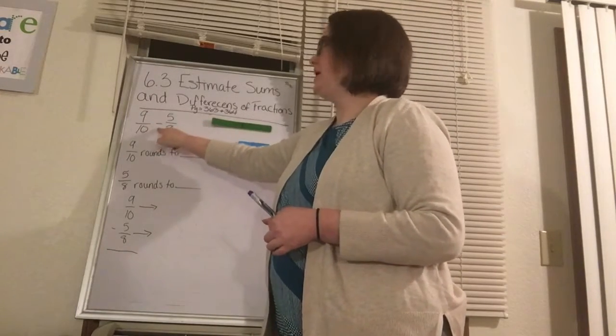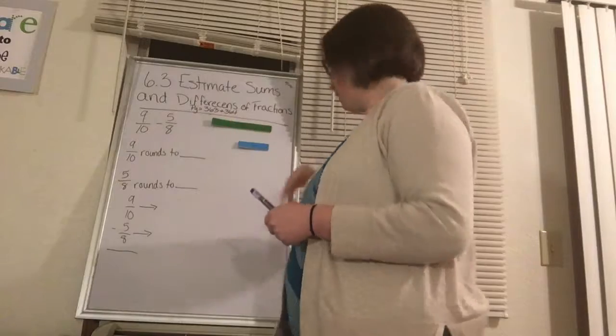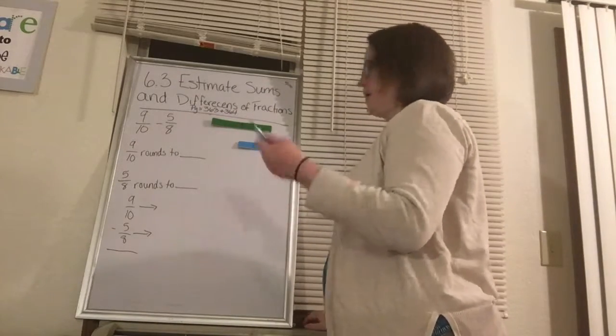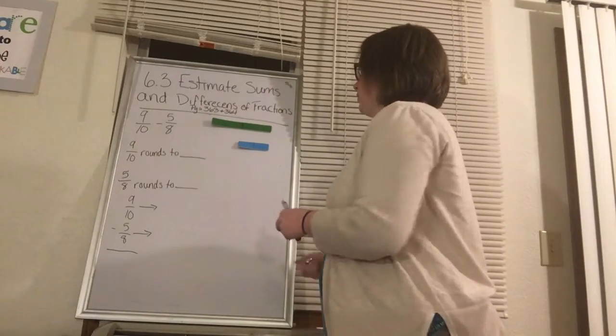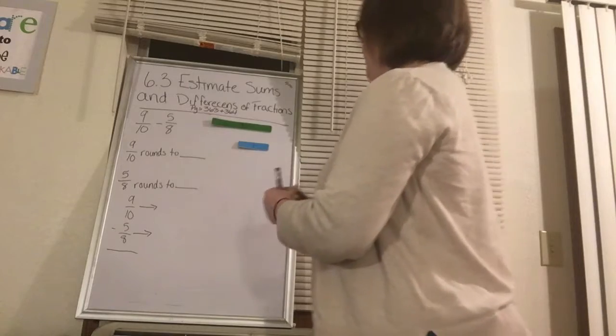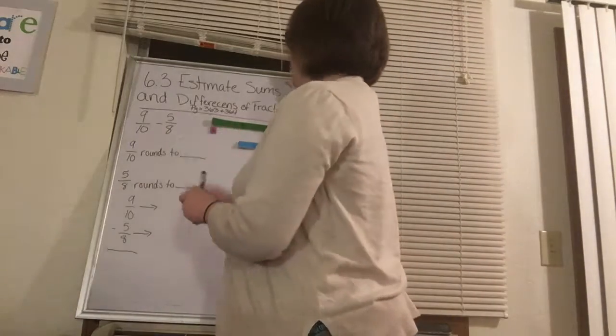So we have 9/10 minus 5/8. 9/10 - you may be able to look at it and know which one it's closest to, but you may have to look that these are each 1/10.